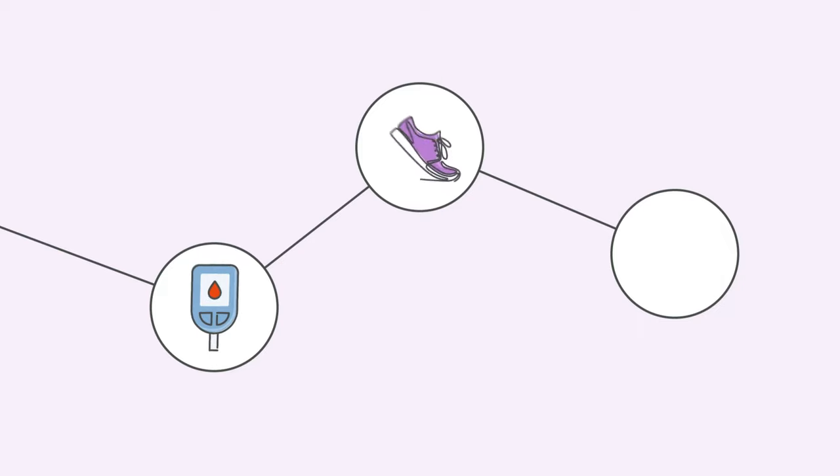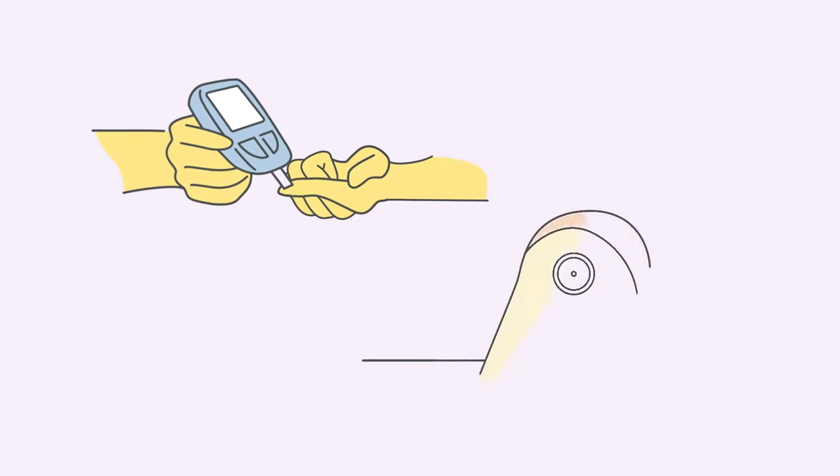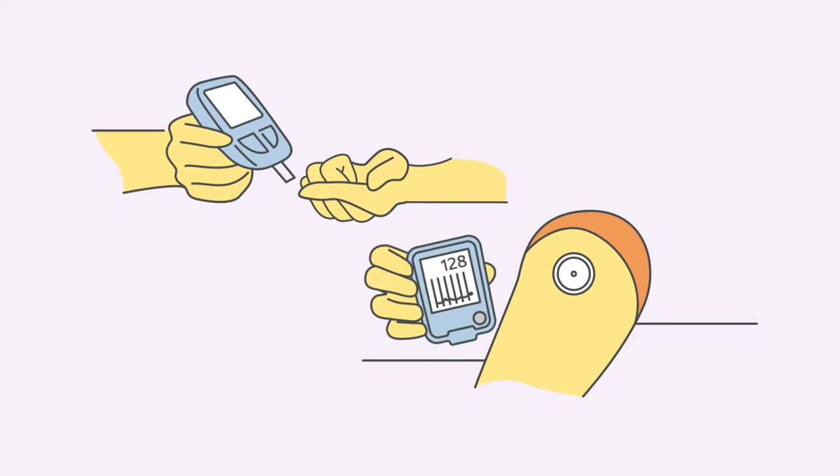Your blood sugar levels, your activity, and what you eat. You'll use a blood sugar meter or a continuous glucose monitor, CGM for short, to track your blood sugar.